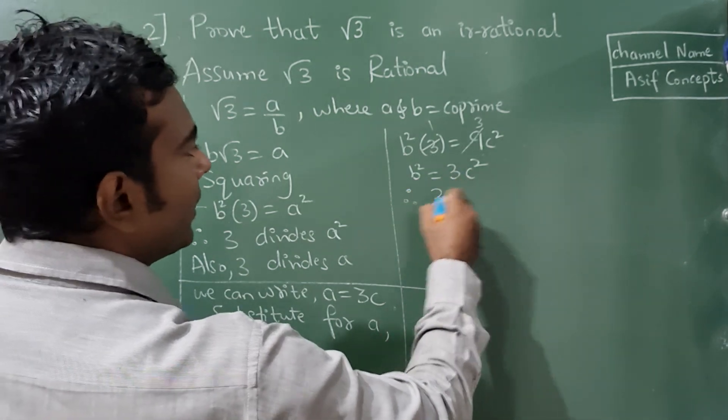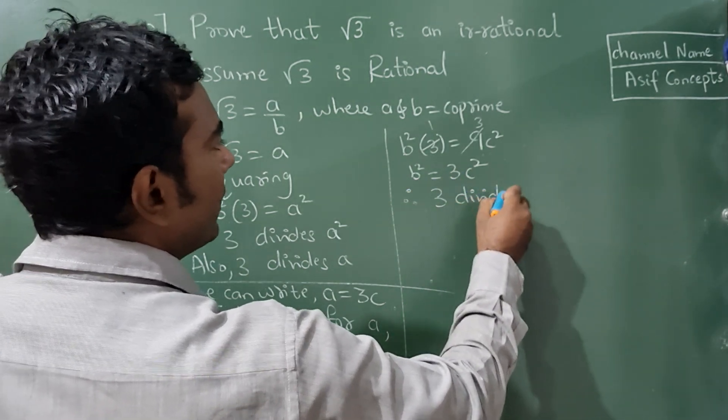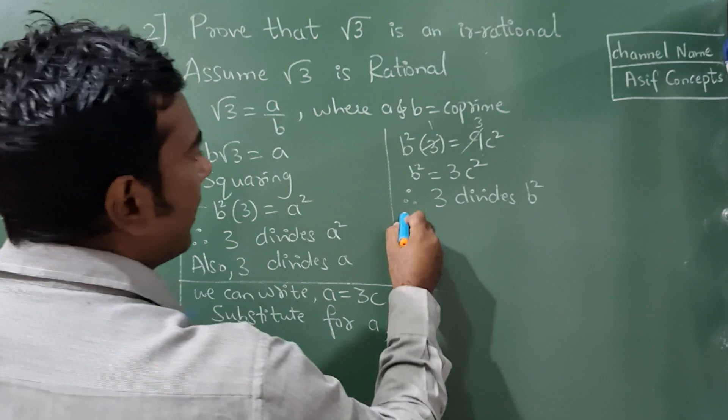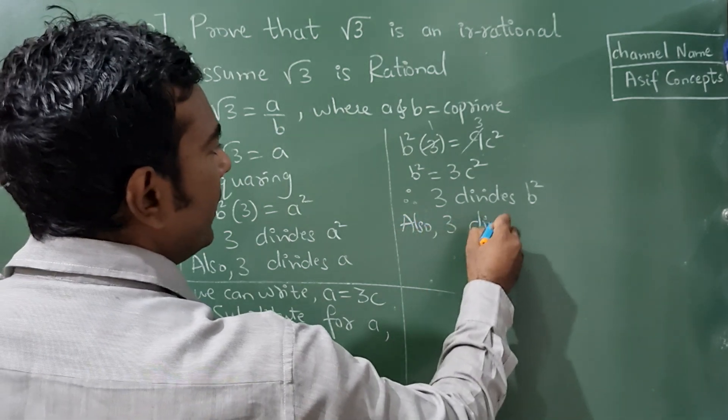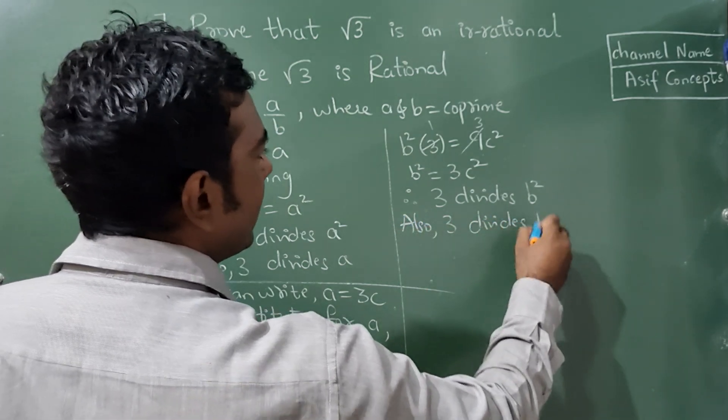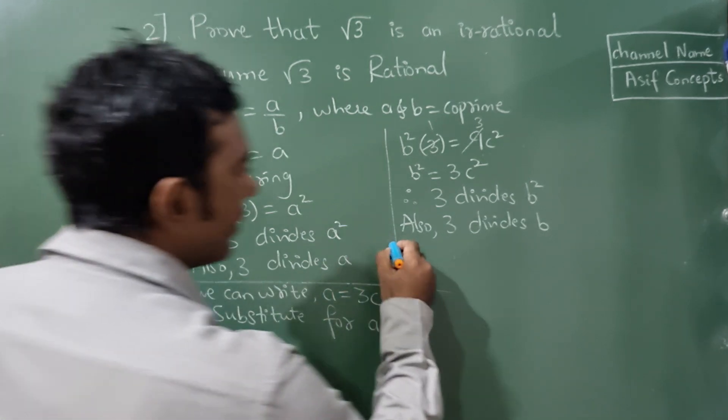Okay? Therefore, 3 divides b square. Also, 3 divides b. Fine.